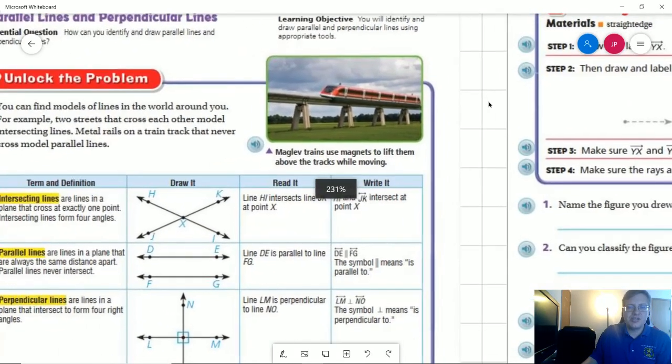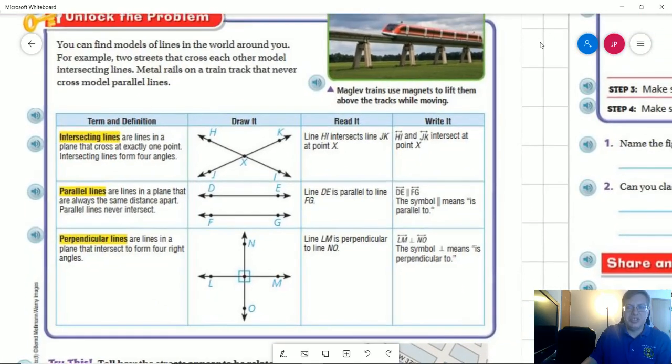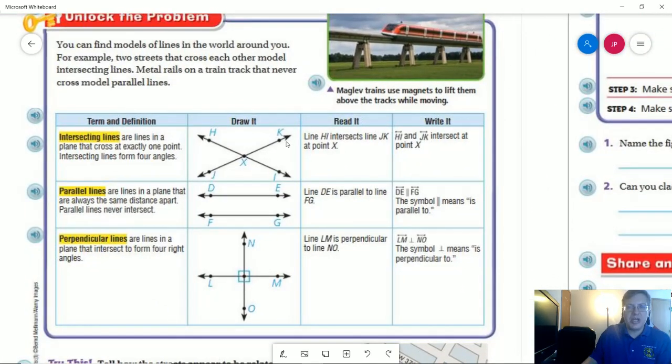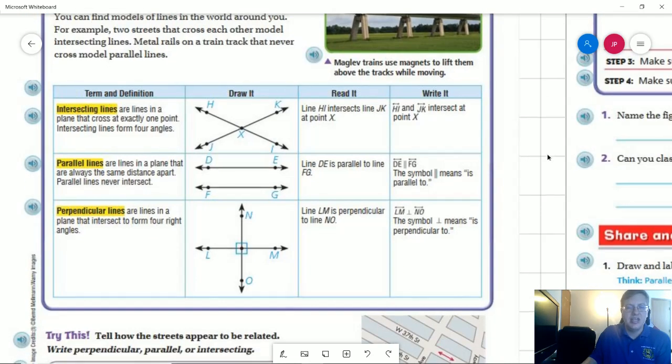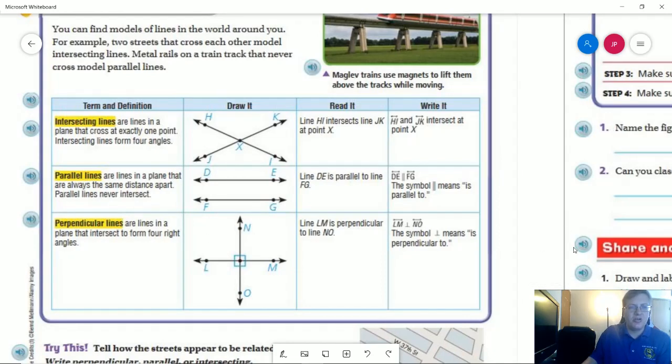What we're going to start with is just talking about what the lines are and we will try to relate this to streets as well because this is where we're normally going to run into these things in the real world. Intersecting lines are going to be lines that cross at exactly one point. This point here would be the intersection and we use that word intersect just like we would use where two streets come together.